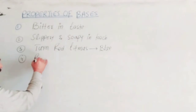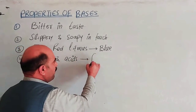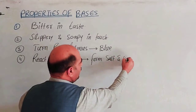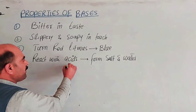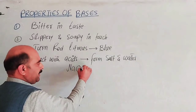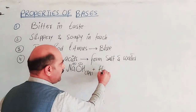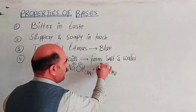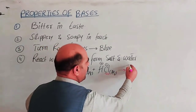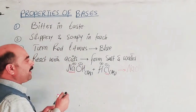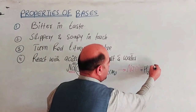The fourth property of bases is that they react with acids to form salt and water. For example, sodium hydroxide (NaOH) reacts with HCl. The sodium ion and chloride ion combine to form sodium chloride (salt), while the hydrogen ion and hydroxide ion combine to form water (H₂O).